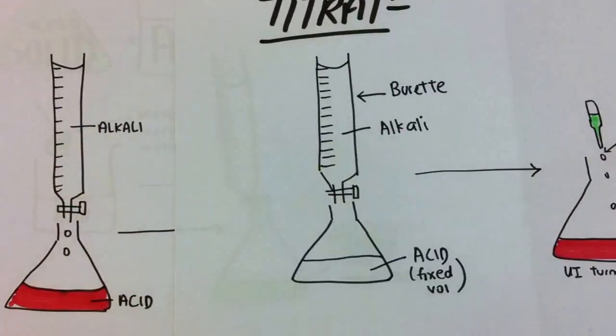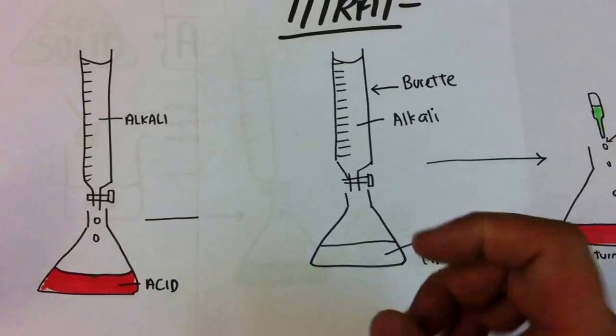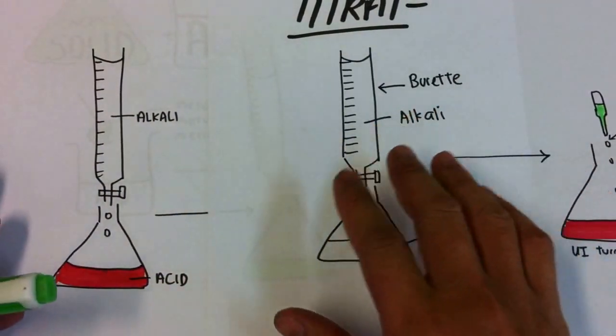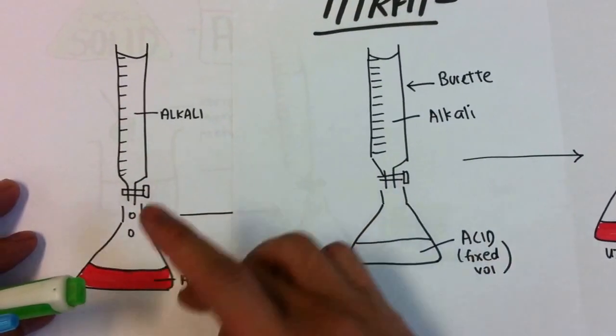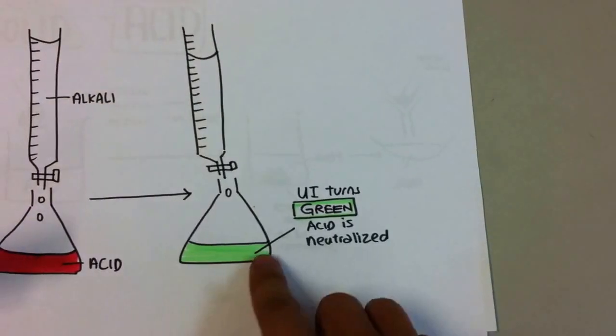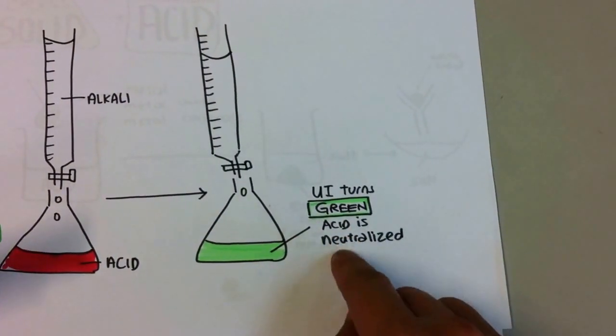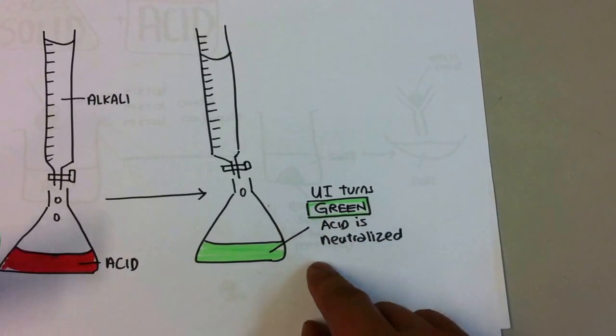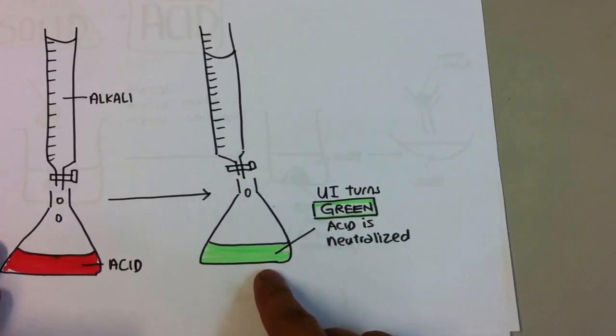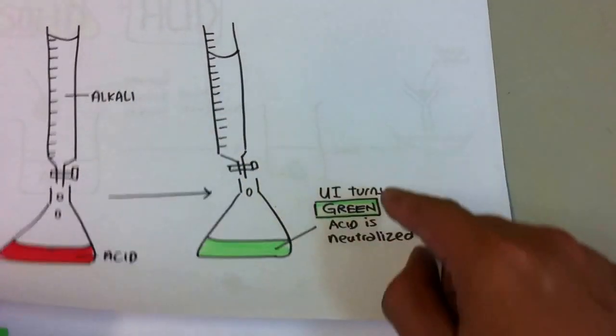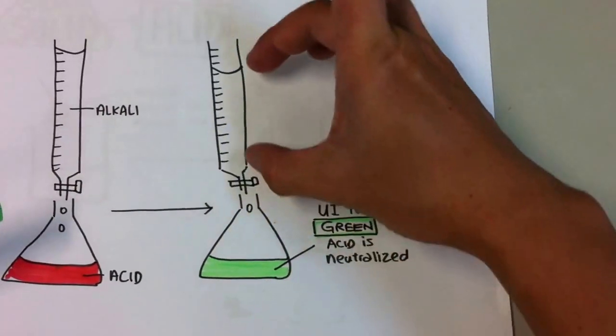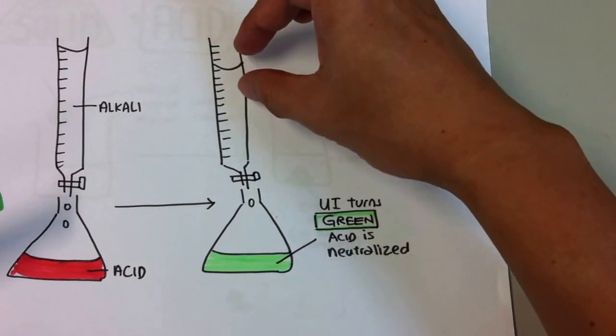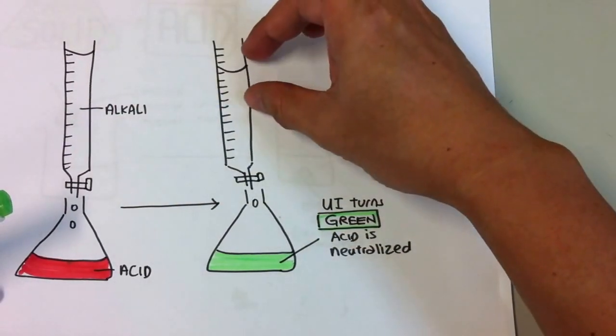So I will keep on adding, adding alkaline. And when do I stop? I stop when point of neutralization is reached, known as the end point. And the solution will now turn green, telling me that all the acid is neutralized. And that's when I know I will stop the reaction. So I will keep on doing this a few times until I find out the correct volume of alkaline that is needed.